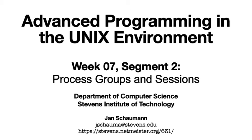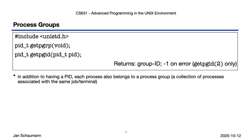We intuitively understand that certain processes are related in some way and should form a group, such as when we pipe output from one command into another. So let's see how that works in detail. First, every process, whether it is run as part of a command pipeline or not, belongs to a process group.